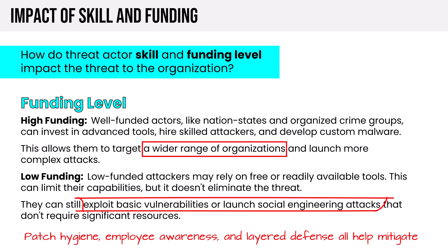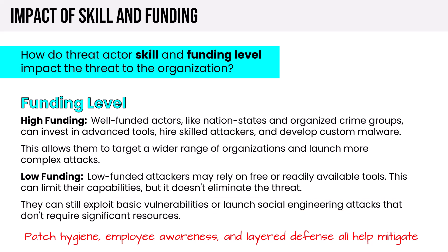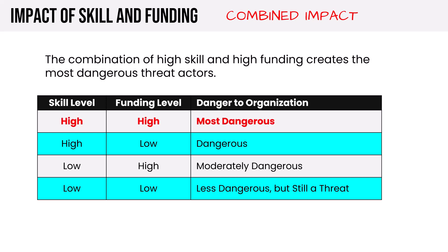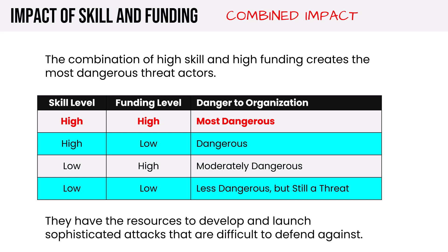We'll go deeper on threats, vulnerabilities, and mitigations throughout Domain 2. Ranking threat actors by danger: high-skill, high-funded are most dangerous; low-skill, low-funded are least. That combination of high skill and high funding creates the most dangerous threats because they have the resources and skills to develop sophisticated attacks that are difficult to defend against — including zero-day attacks and novel vulnerabilities. This is why AI-driven, machine-learning-driven protection based on malicious behaviors is so valuable; we can no longer rely solely on antivirus signatures.